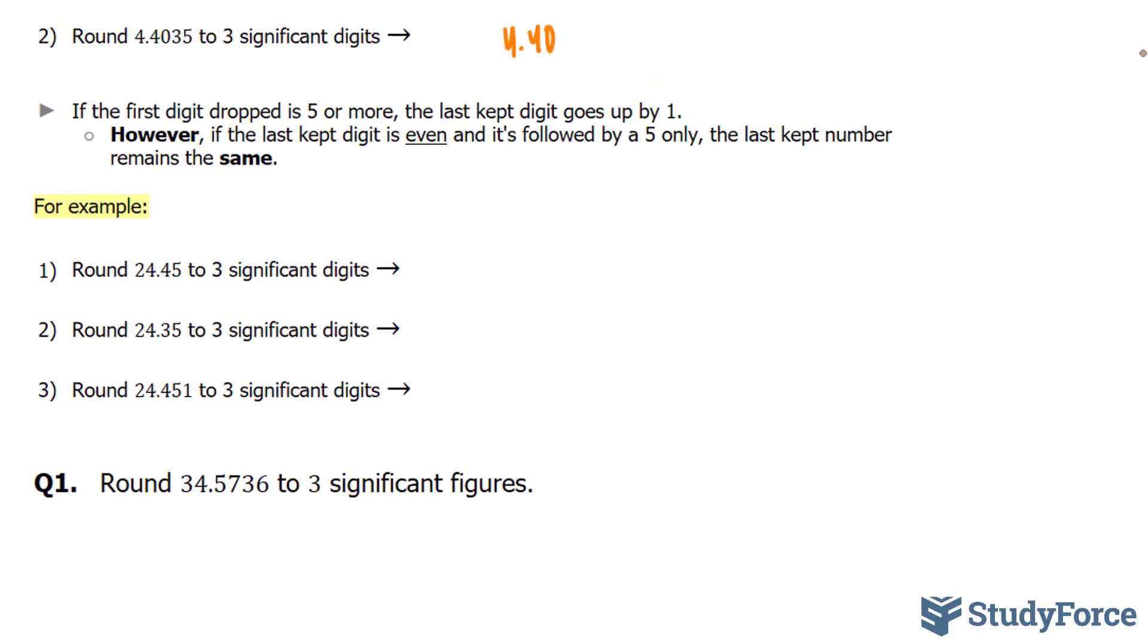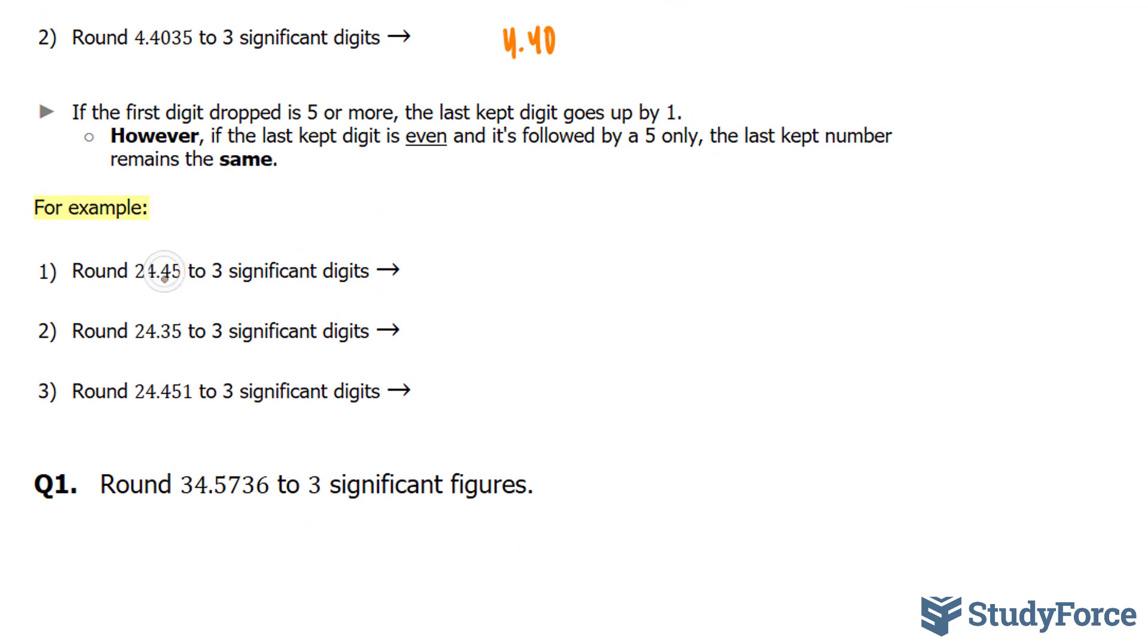Now, according to the rule, it says that if this number is even, and it's a 5 followed by nothing, then this number doesn't go up. It actually stays the way it is, 24.4.